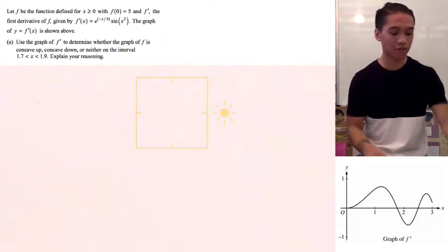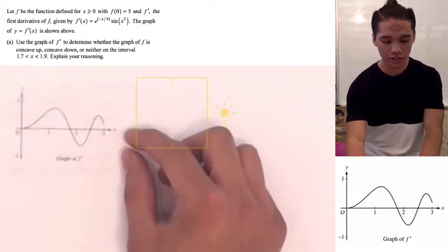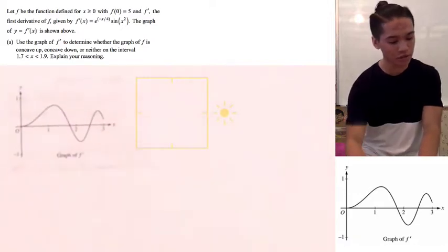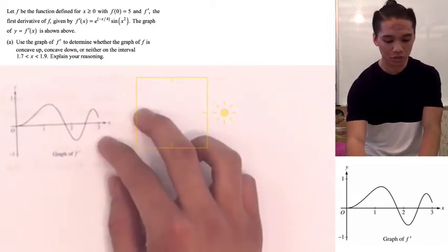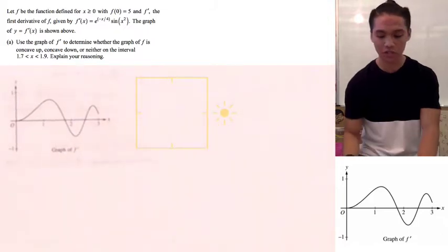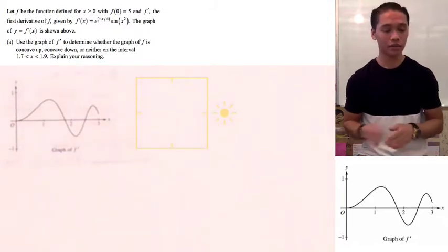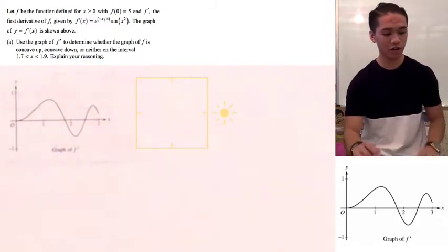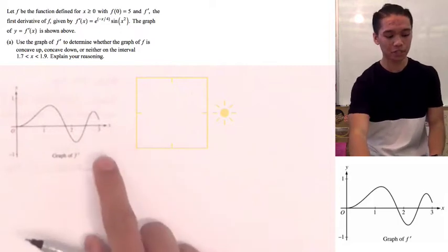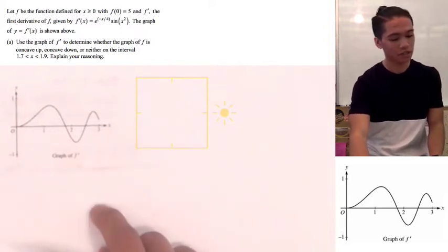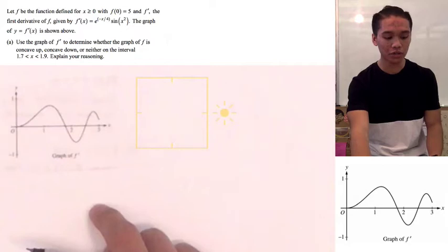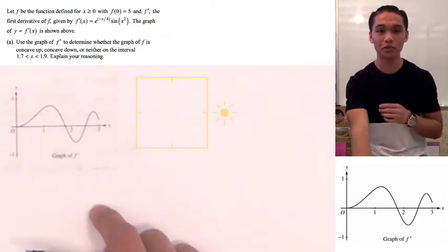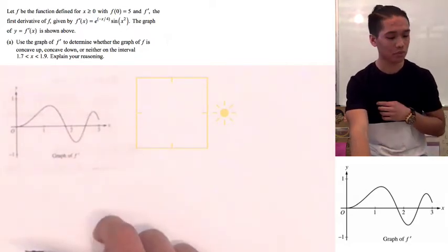The graph of f'(x) is shown right here, and we're going to be using this throughout the problem. We can go ahead and start to answer part a. Part a says: use the graph of f prime to determine whether the graph of f is concave up, concave down, or neither on the interval where x is between 1.7 and 1.9.